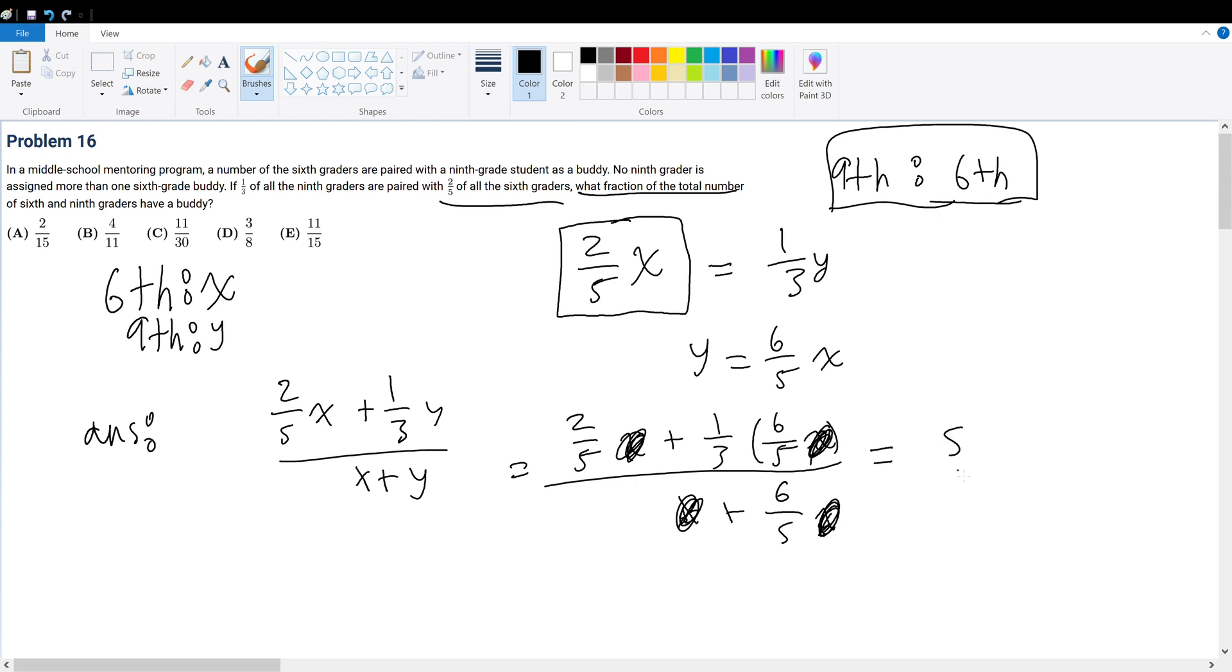This now becomes 5 over... Actually, this is 1 + 6/5, right? Because you factor out the x, you have 1. So this is actually 11, right? 11/6. No, wait... sorry. 1 + 6/5. That's 11/5. So that's 5/11 times 2/5 + 2/5. That's 4/5 times 5/11. So you got 4/11. So your final answer will be answer choice B.